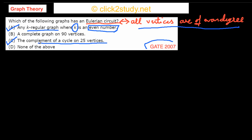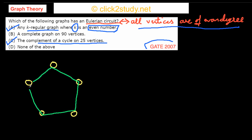Option C is the complement of a cycle on 25 vertices. To understand how to find a complement of a graph, let's use a small example with five vertices. Suppose we have a cycle graph with five vertices — this is our graph.